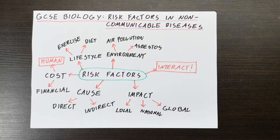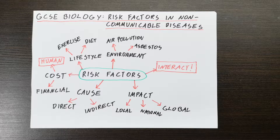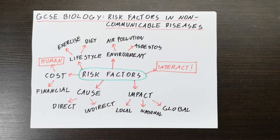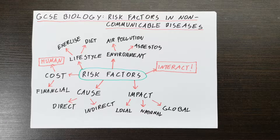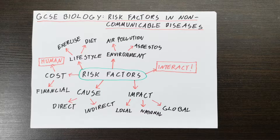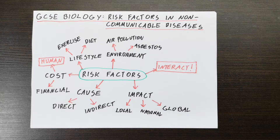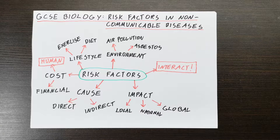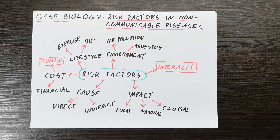Let's look at how risk factors work and how they can be classified. First, we have natural factors such as genetics — which could be single genes or multiple genes working together to convey a risk factor. Or it could be lifestyle factors such as exercise and diet. For example, lack of exercise and a high fat, high sugar diet is a risk factor for type 2 diabetes.